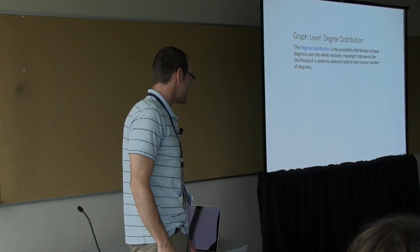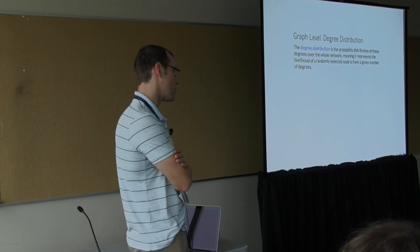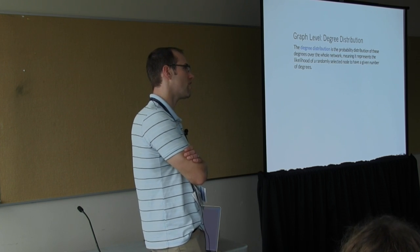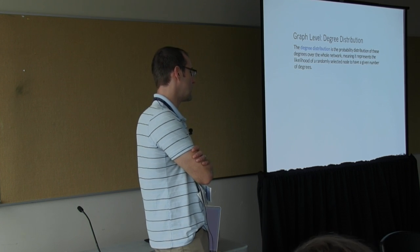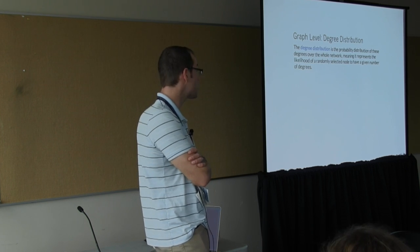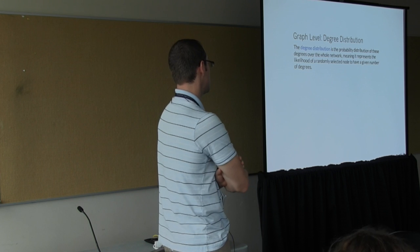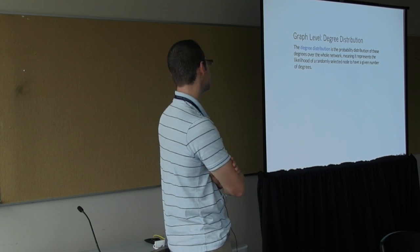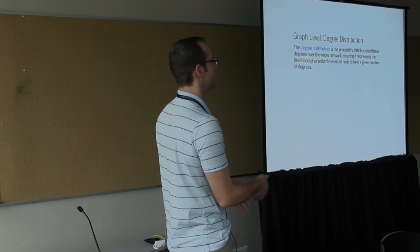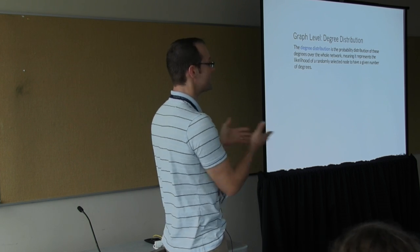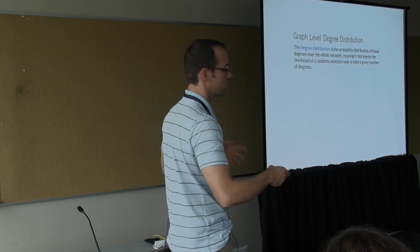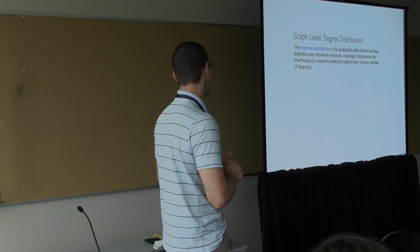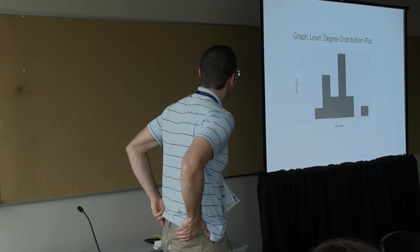Degree distribution. This is an important notion because this is actually when you run statistical tests to figure out which model best fits your empirical network. This is typically what you're going to run it against. The degree distribution is just the distribution of the degrees available in your graph. Where degree, again, is the number of edges that come off from each of your nodes. And it looks like this in this case.